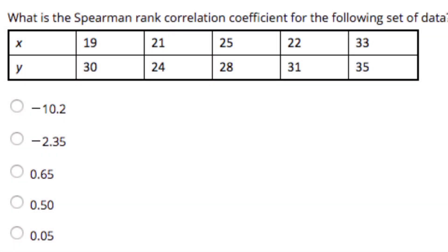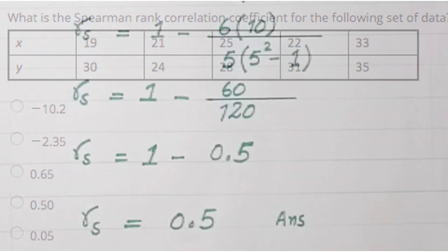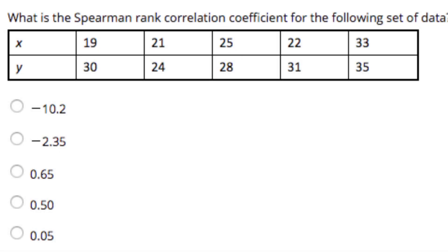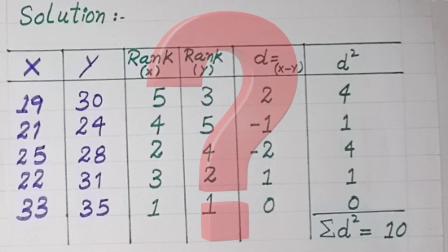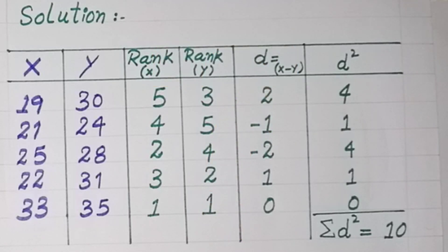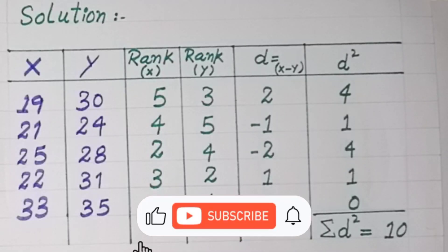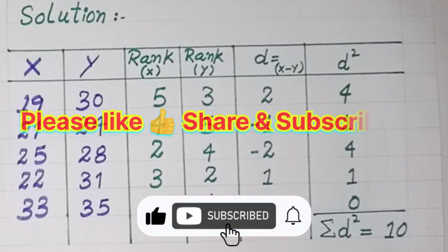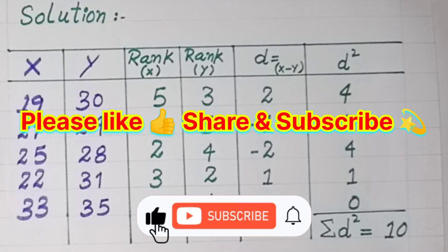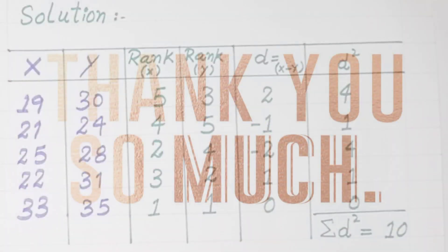There are a few options given to us, and since our calculated rank correlation is 0.5, the fourth option is correct. If you have any questions regarding this lecture, you can ask through the comment section. Please like, share, subscribe, and press the bell icon for more updates. Thank you so much.